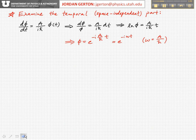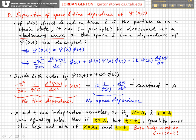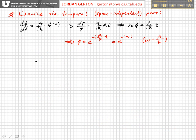Let's examine the temporal, the space-independent part of the wave function. If we have the space-independent part: iℏ times 1 over φ times dφ/dt is equal to constant. If we rearrange that, we just have dφ/dt is equal to that constant divided by iℏ times φ.